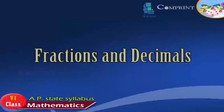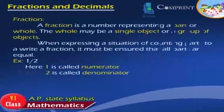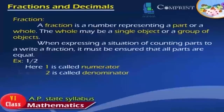Fractions and Decimals. A fraction is a number representing a part or a whole. The whole may be a single object or a group of objects. When expressing a situation of counting parts to write a fraction, it must be ensured that all parts are equal.